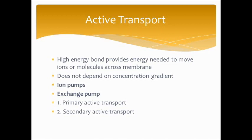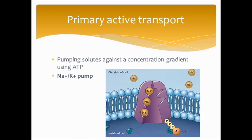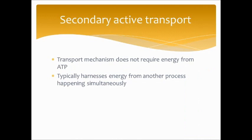There are two types of active transport broadly: primary and secondary. Primary active transport pumps solutes against a concentration gradient using ATP. One commonly used example is the sodium-potassium pump, also called the sodium-potassium ATPase pump — it exchanges intracellular sodium for extracellular potassium, making it an exchange pump or antiporter system. Secondary active transport does not actually require energy from ATP; it harnesses energy from another active transport process already using ATP — so it's kind of along for the ride.